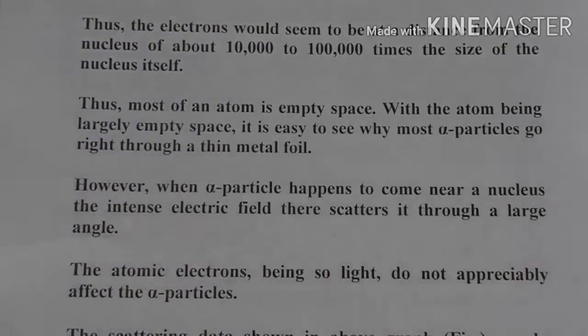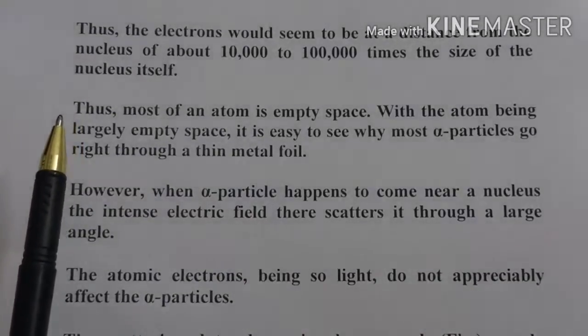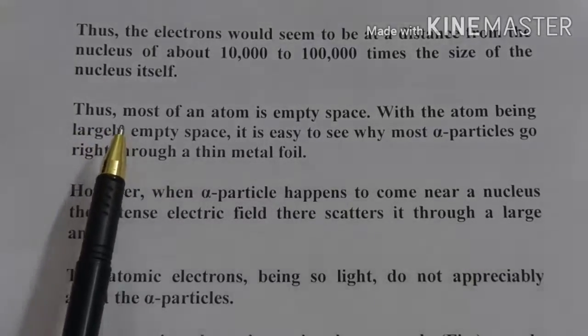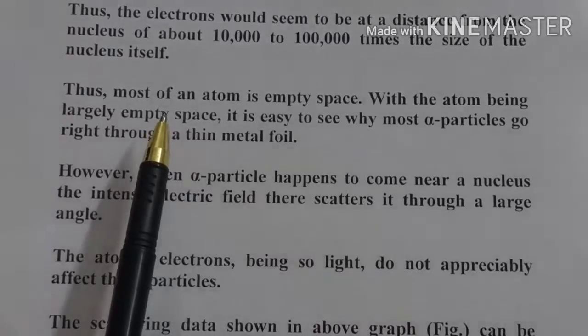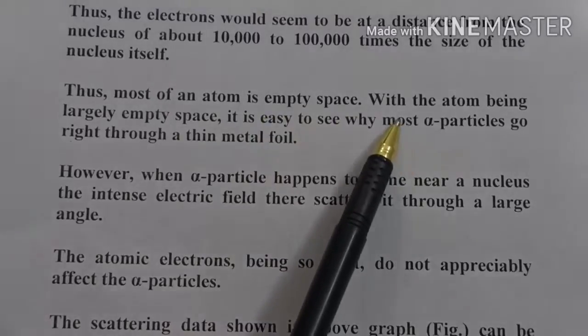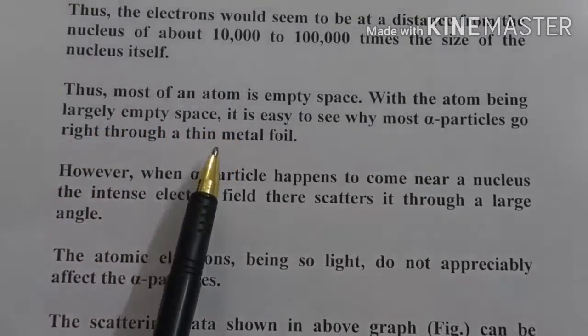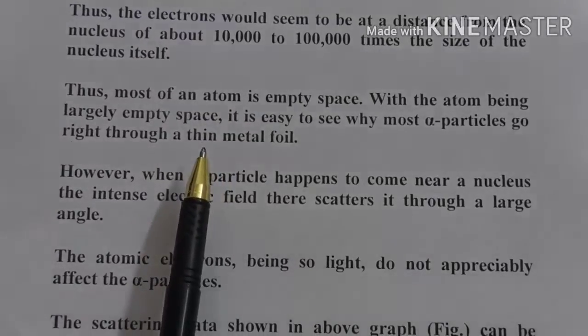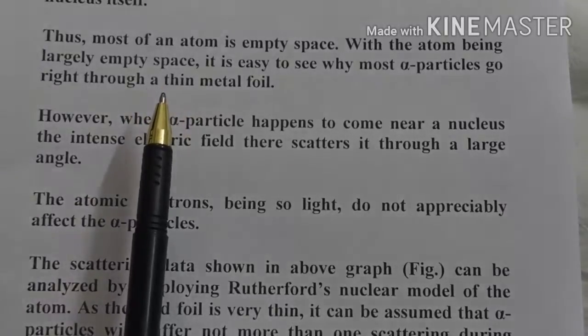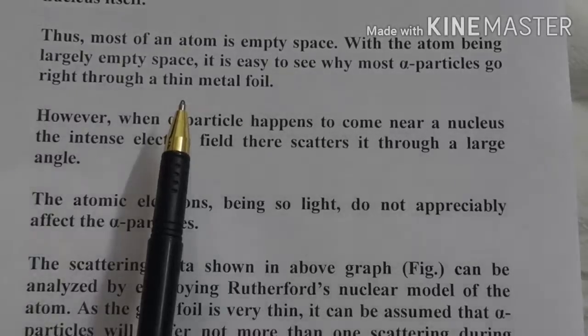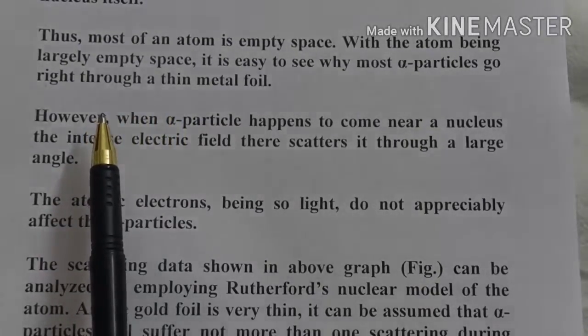When you see this model, atom is mostly empty because the mass is concentrated in the center and in a small region. What happens is that the alpha particle incident will pass through the foil because there is a lot of empty space. When alpha particle comes very close to the nucleus, it will experience the appreciable effect of the nucleus.